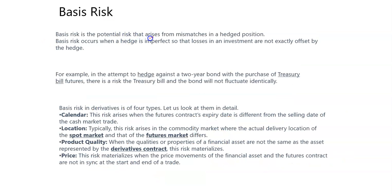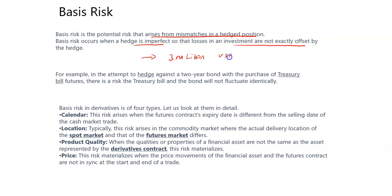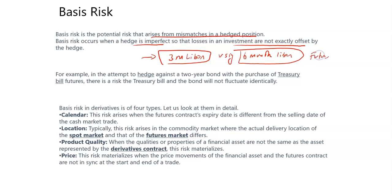Basis risk is the potential risk that arises from mismatches in the hedge position. Basis risk occurs when a hedge is imperfect, meaning losses in investments are not exactly offset by the hedge. A famous example in financial management is hedging a three-month LIBOR position using a six-month LIBOR future — you are not matching the underlying, so there will be a basis risk.